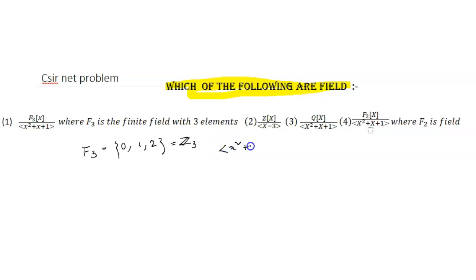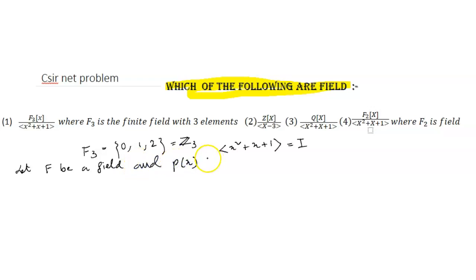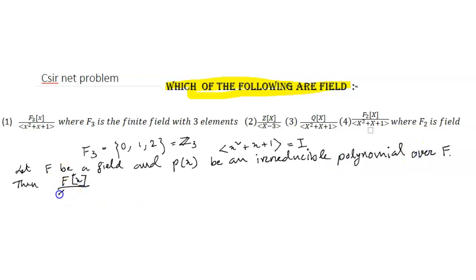We know F3[x] / (x²+x+1). Now there is a theorem: if F is a field and p(x) is an irreducible polynomial over F, then F[x] / (p(x)) is a field. So now we have to check whether p(x) = x²+x+1 is irreducible or not.